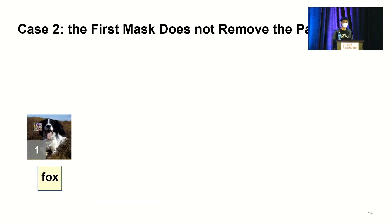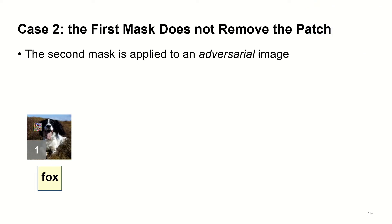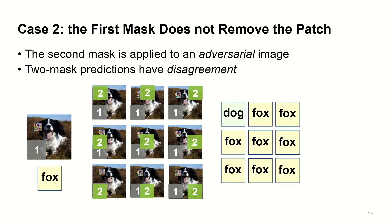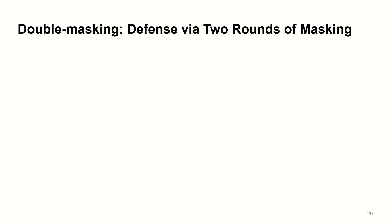On the other hand, if the first mask doesn't remove the patch, the second mask is applied to an adversarial image, and we will see a prediction disagreement. Therefore in practice, a disagreement means there are still adversarial pixels left, and we shouldn't trust this prediction. This difference allows us to develop our final defense algorithm — we call it double masking, meaning we defend with two rounds of masking.